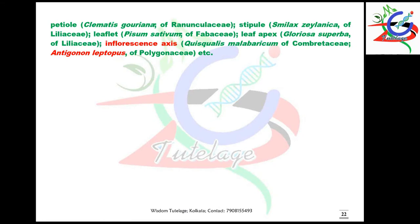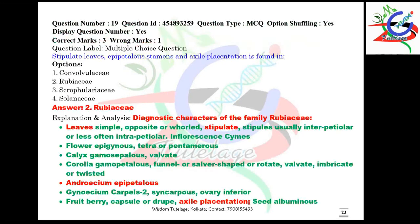Question number nineteen: stipulate leaves, epipetalous stamens, and axile placentation are found in which family? These are the characters of family Rubiaceae. Other diagnostic characters of family Rubiaceae are also given here — you have to remember those characters as well.